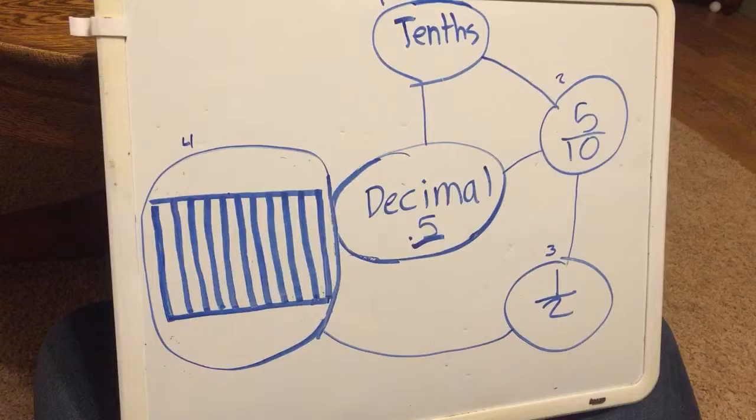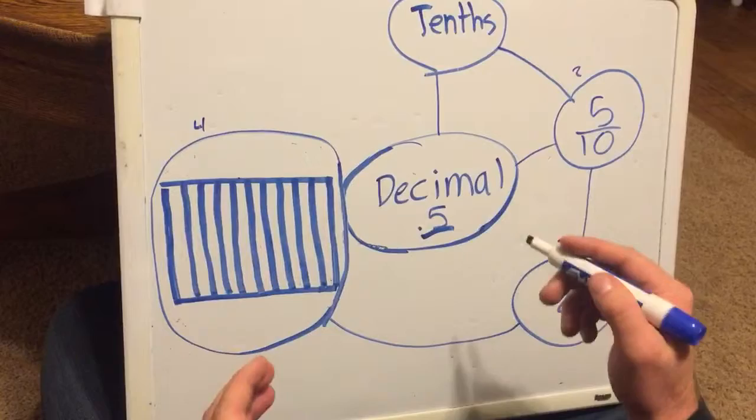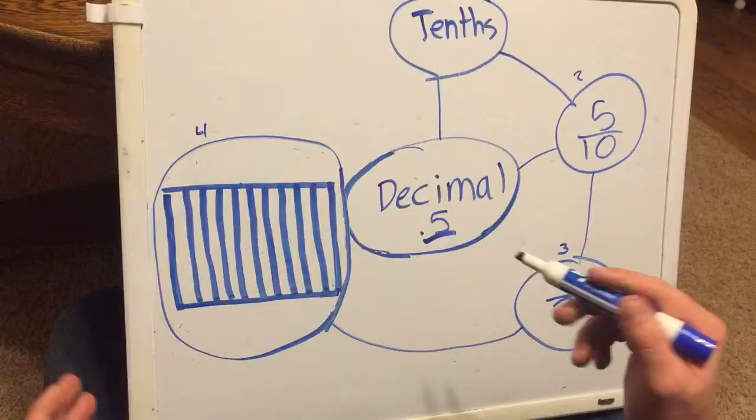Another way I might represent 0.5 is using a grid. So here we have a grid with 10 columns. The reason we have 10 columns is because the 5 is in the tenths place, representing 5 over 10 as a fraction.